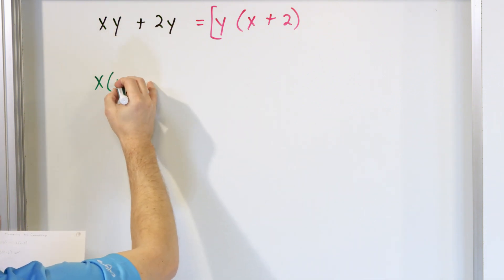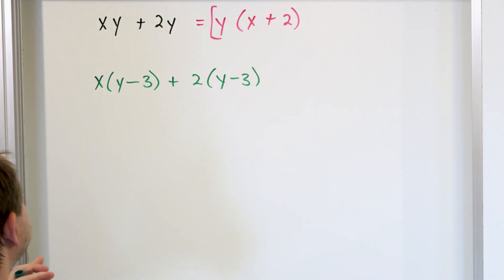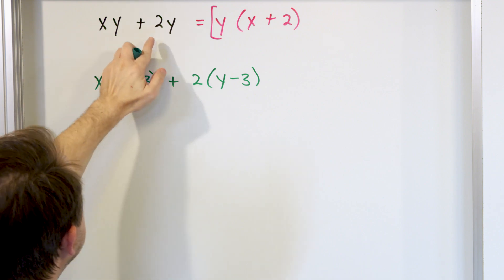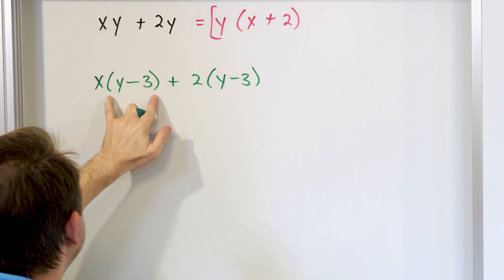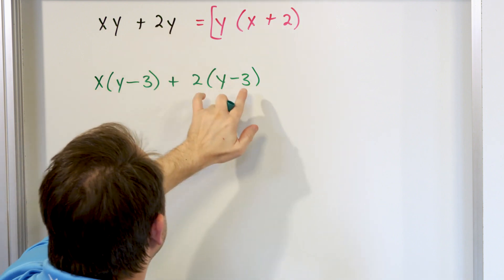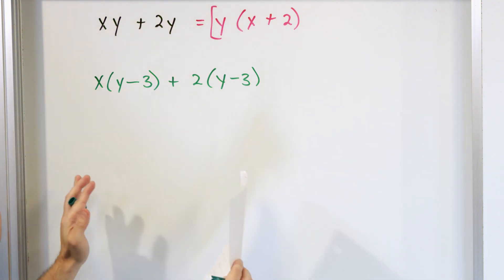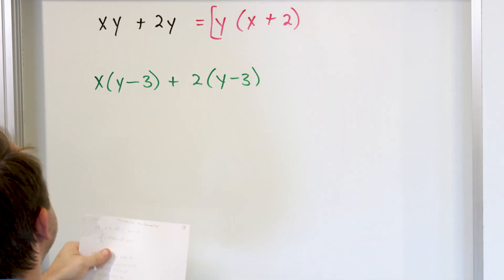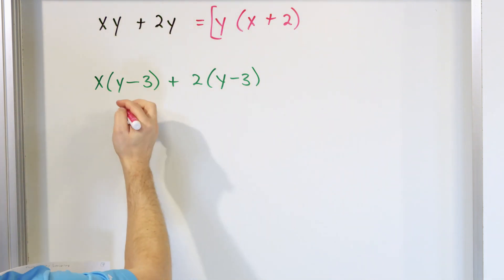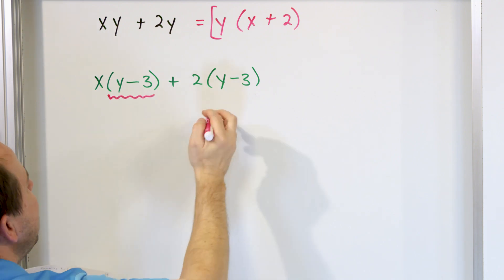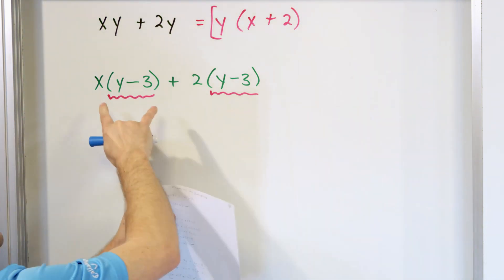Let's say we have x times the quantity y minus 3, plus 2 times the quantity y minus 3. You notice this problem is exactly the same as what we just did — here's the x, here's the 2, here's the y and here's the y — except I've replaced y with the quantity y minus 3 in both terms. And here is the main idea of factoring by grouping: it doesn't look like there's much in common between these terms until you zoom out and see that it's x times something and 2 times something, and what's common to both is not a single variable — it's the entire quantity y minus 3.